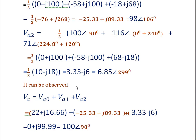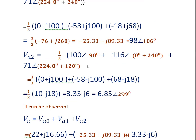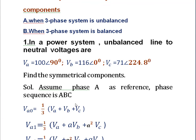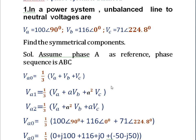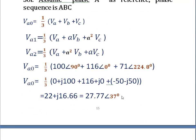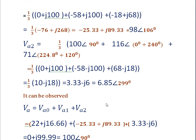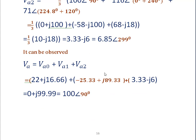As a verification, Va can be calculated as Va0 + Va1 + Va2. Substituting the values we calculated in rectangular form and converting to polar form, we get 100∠90°, which matches the given Va = 100∠90°. This confirms that the zero sequence, positive phase sequence, and negative phase sequence components calculated are correct. Thank you.